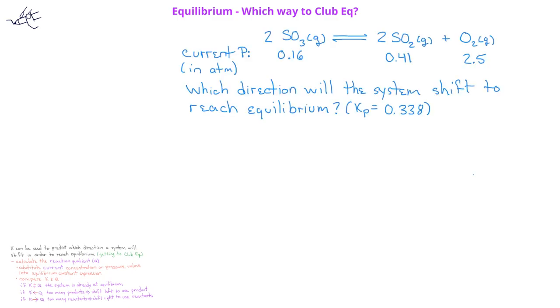Let's look at an example comparing the equilibrium constant and the reaction quotient. In this system, we have two moles of SO3 gas in equilibrium with two moles of SO2 gas and one mole of O2 gas. If the current pressures are 0.16 atm of SO3, 0.41 atm of SO2, and 2.5 atm of O2, which direction will the system have to go in order to reach equilibrium?